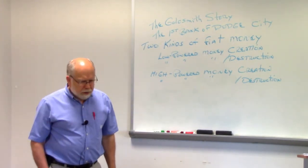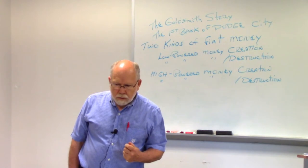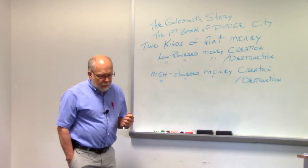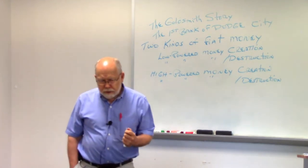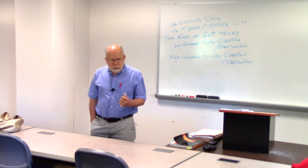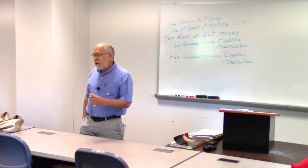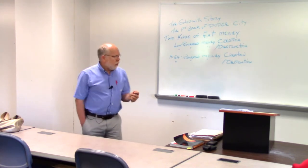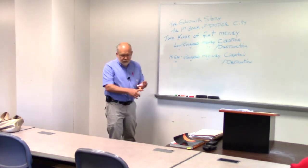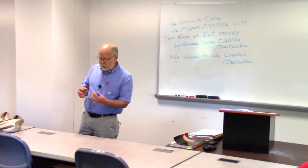So in your text, there is the story of the Goldsmith. Now, in the Middle Ages, the most commonly traded commodity, monetary commodity, was gold. Other things were traded, but gold was very precious. And there were silversmiths and blacksmiths and goldsmiths. People worked with gold.